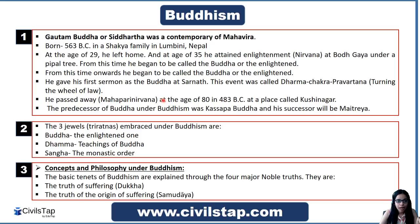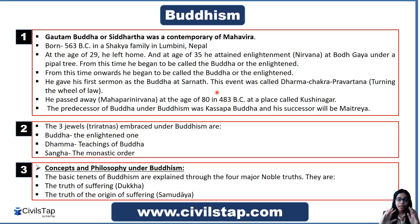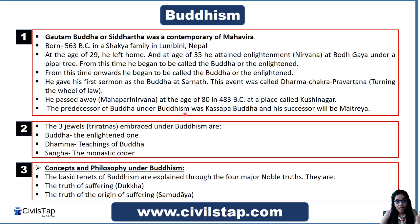After enlightenment, Siddhartha became the Buddha, and he gave his first sermon at Sarnath. This event was called Dharma Chakra Pravartana, meaning 'turning the wheel of law' — i.e., the teachings Gautam Buddha gave in his first sermon. This is also a key word you have to remember. He then passed away at the age of 80 in 483 BC at a place called Kushinagar. This is factual information that is also asked in statements.